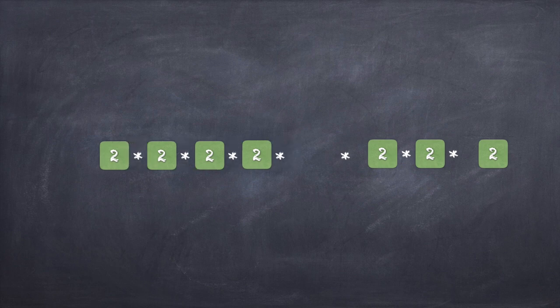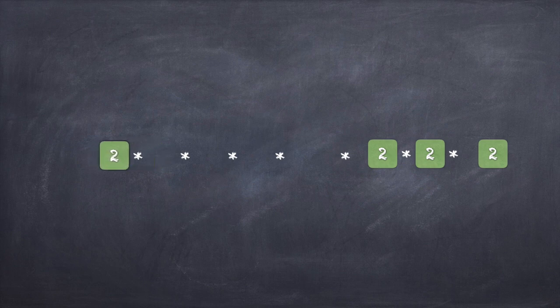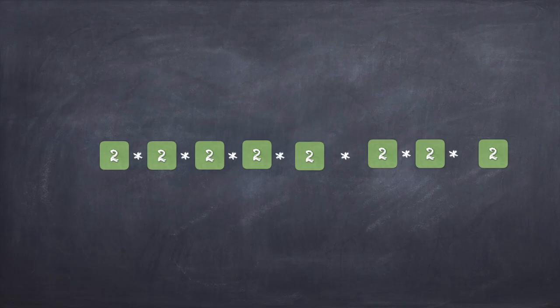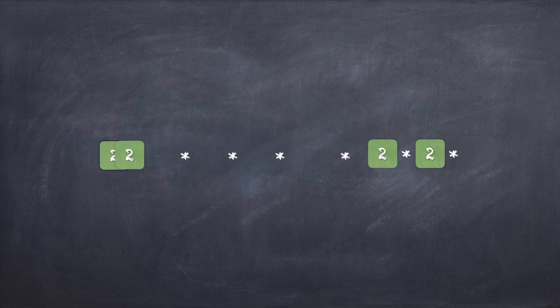And 2 raised to 3 means there are three 2s being multiplied together. If I count, there are 5 plus 3 equals 8 twos in total. To express this in index form, I collect all the 2s and write 2 raised to 8, indicating there are a total of eight 2s. That is how Law 1 is derived: n raised to a times n raised to b gives n raised to a plus b.